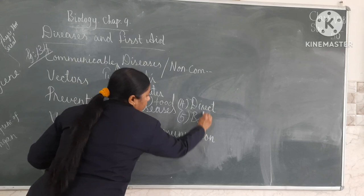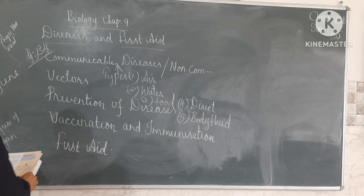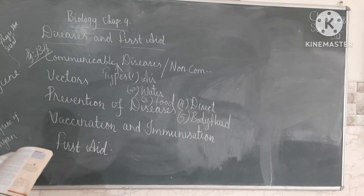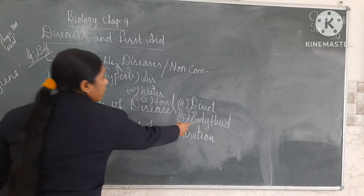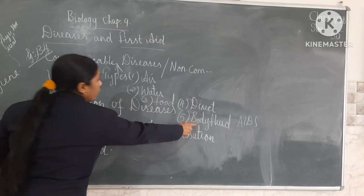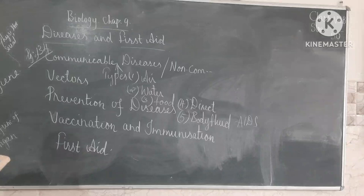The fifth type is through body fluid. Body fluid is a medium for spreading disease. Some communicable diseases spread through the exchange of body fluids as a result of contact with an infected person. For example, AIDS — Acquired Immune Deficiency Syndrome — is one deadly disease that also spreads through body fluid and comes into the category of communicable disease.